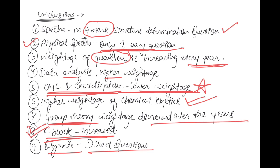The takeaway is not to ignore organometallic and coordination chemistry — study them with the same importance as before. However, additionally put more emphasis on quantum chemistry, f-block elements, and chemical kinetics. These three topics deserve extra focus alongside your regular preparation, whichever subject you prefer, to maximize your score.